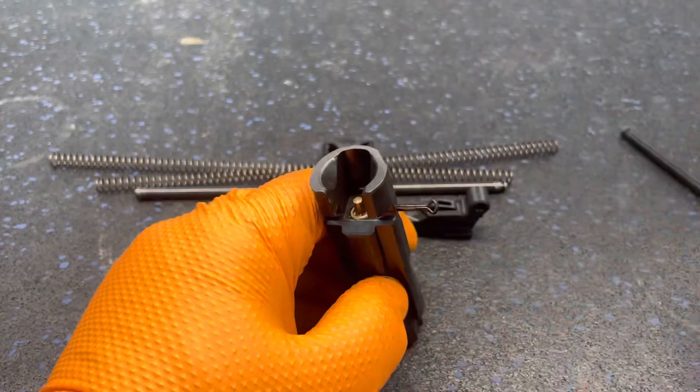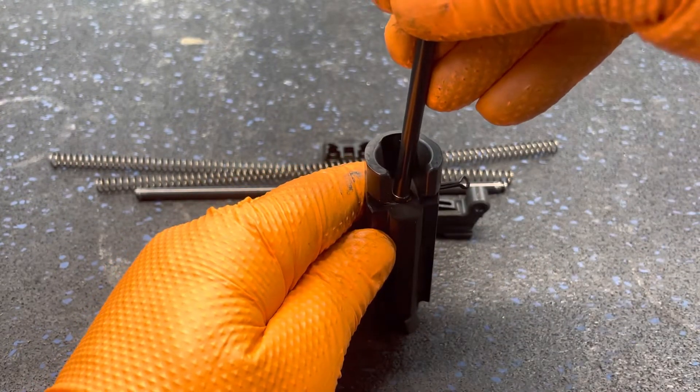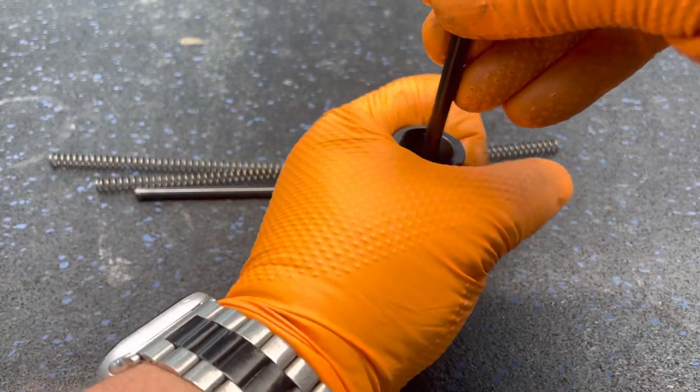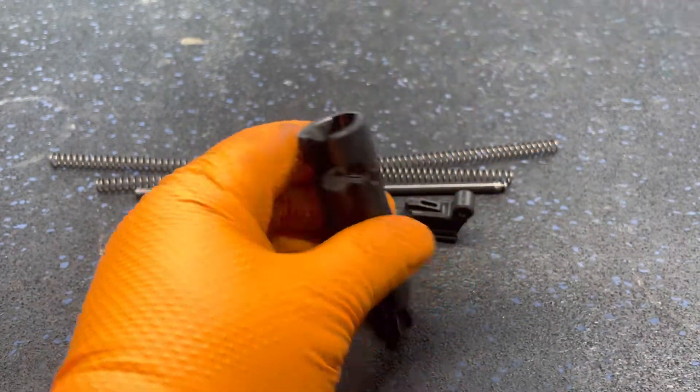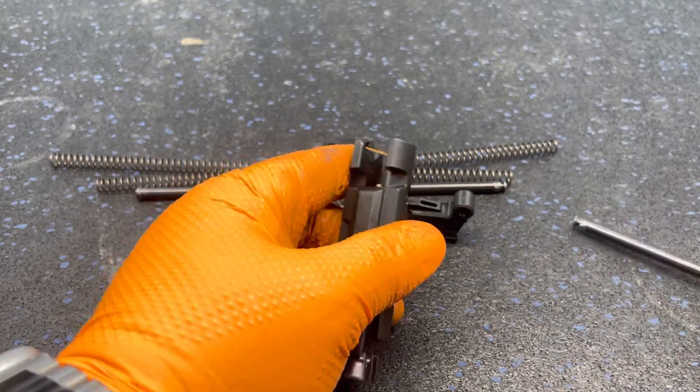Start the firing pin retaining spring, and then I use the op-rod, or the recoil spring rod, to push down on the firing pin while I push in the retaining pin. Then I use the rod once again to push it and make sure that it's flush.